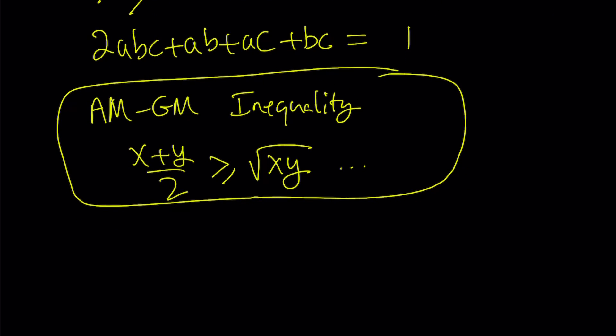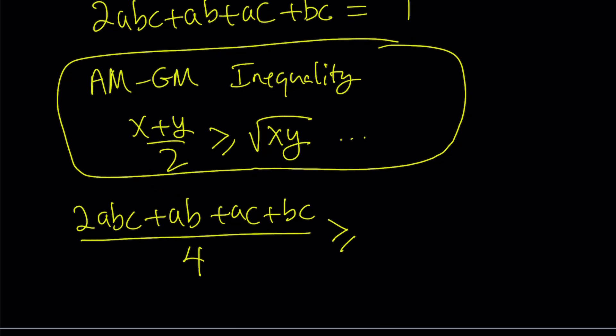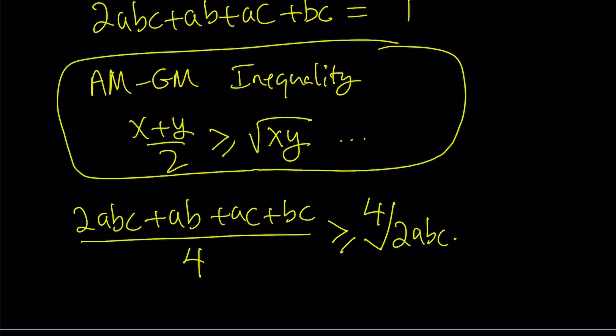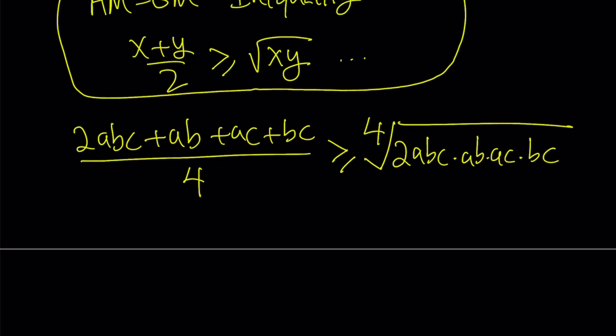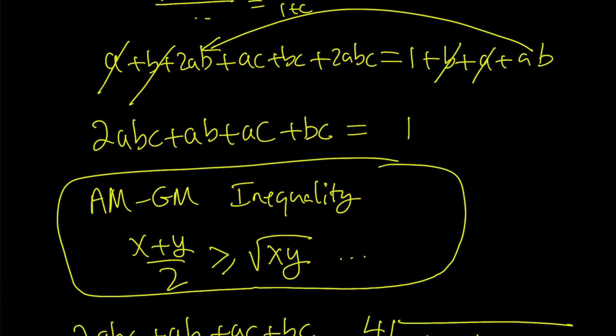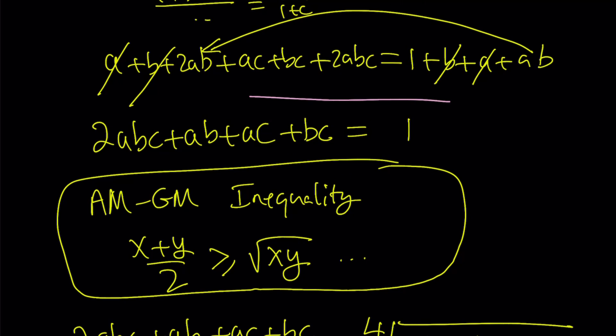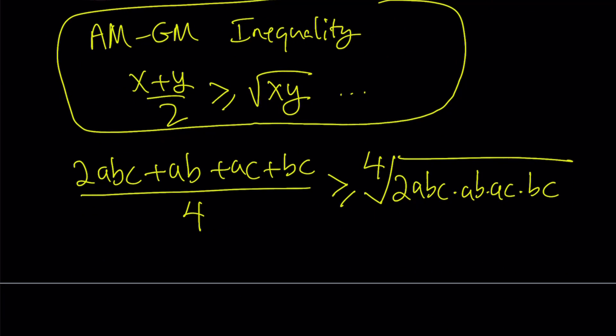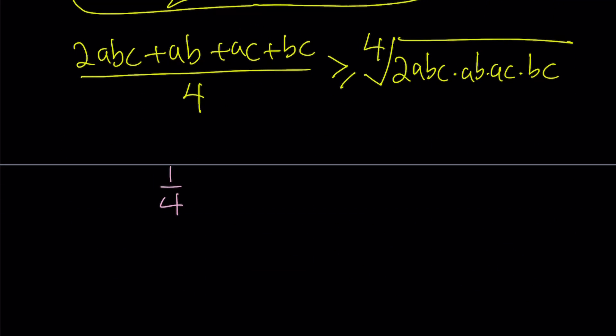Okay, so with four terms, this is what the AM-GM is going to look like. We're going to have 2abc, ab plus ac plus bc. So their arithmetic mean is basically their sum divided by 4. And according to AM-GM, this is going to be greater than or equal to the fourth root of their product, which is 2abc times ab times ac times bc. So let's go ahead and simplify this expression and see how we can arrive at the answer from here. Now, one thing that's very important is that we simplified our expression and we ended up with a constant sum, right, for these terms. So this sum is equal to 1. Therefore, I can just replace the numerator here with 1. That's going to give me 1/4.